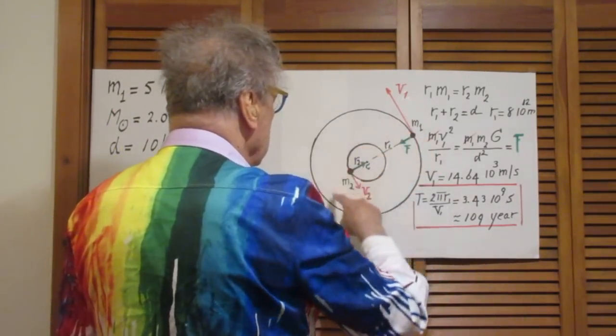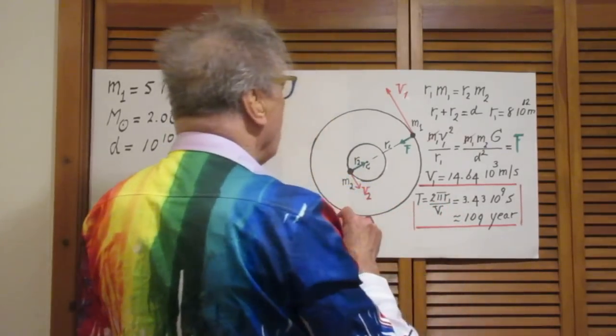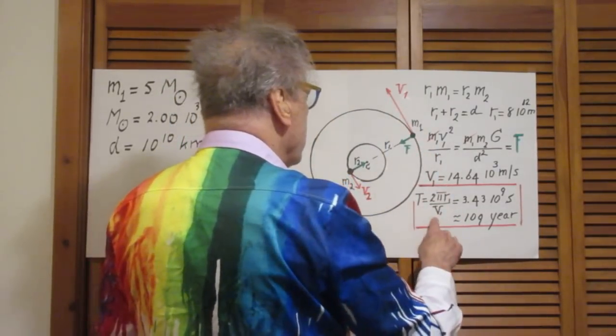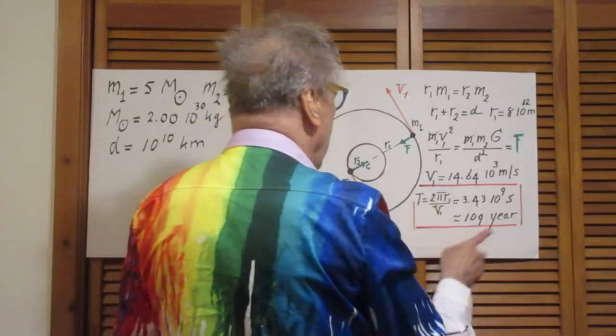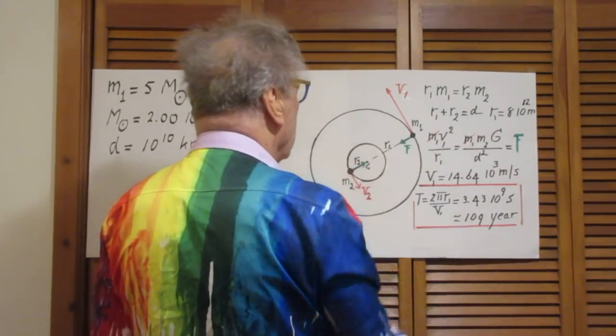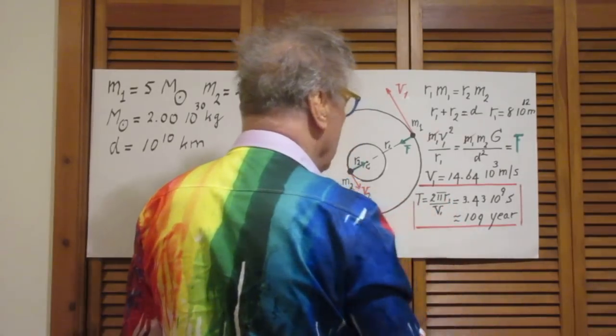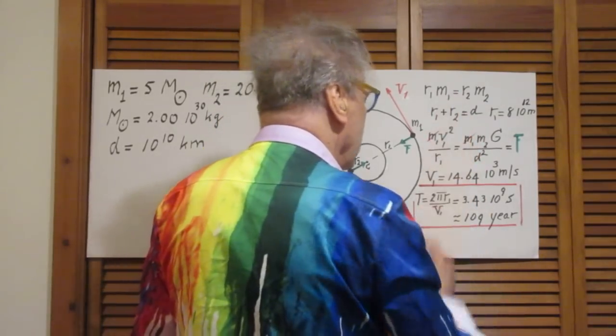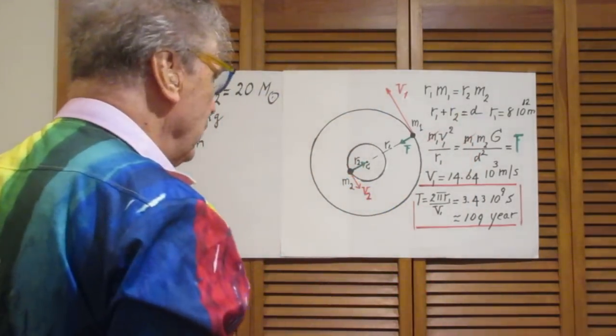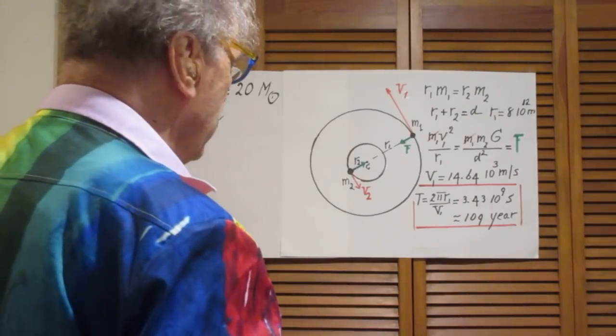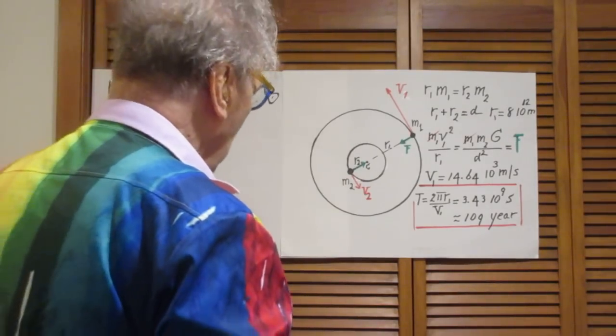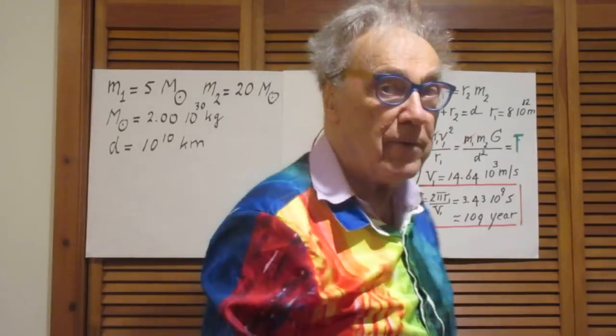The circumference here is 2 pi r1, and since it moves with the speed v1, the time that it takes to make one complete rotation is 2 pi r1 divided by v1, and that I find then is 3.43 times 10 to the ninth seconds, which is about 109 years.